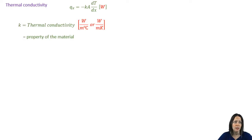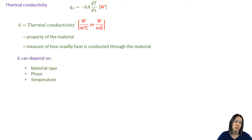So here's Fourier's law. We've already mentioned K, the thermal conductivity. It's a property of the material and it measures how easily heat is conducted or passes through the material. K depends on the material type, phase, and temperature.